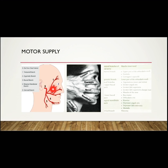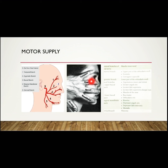The motor supply of the face is via the facial nerve through five branches — namely the temporal, zygomatic, buccal, mandibular, and cervical. The temporal branch supplies the upper part of the muscle around the eye, that is the orbicularis oculi. The zygomatic branch supplies the lower part of the orbicularis oculi. The buccal branch supplies the muscles around the mouth, that is the orbicularis oris. The mandibular branch supplies the muscles around the lower lips and chin. The cervical branch supplies the platysma.